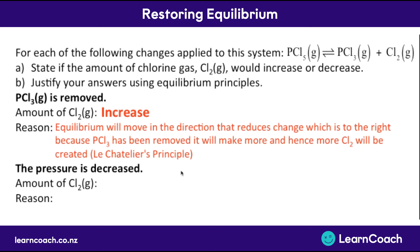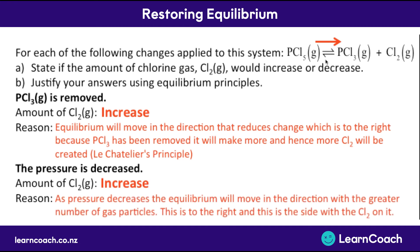For the second change, if we decrease the pressure, we apply the opposite of our pressure rule. On the left-hand side there is one gas particle (PCl5) and on the right-hand side there are two gas particles (PCl3 and Cl2). So as pressure decreases, equilibrium moves in the direction with the greater number of gas particles — to the right. Since Cl2 is on the right-hand side, the amount of Cl2 will increase. This is how equilibrium reactions balance out any changes.